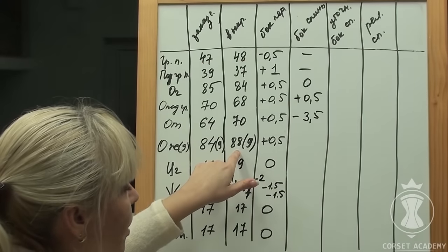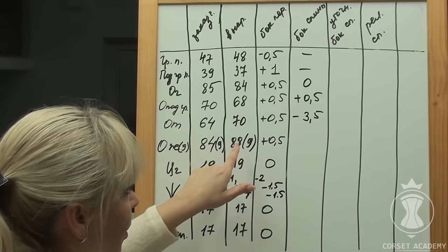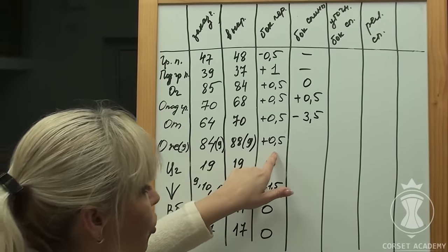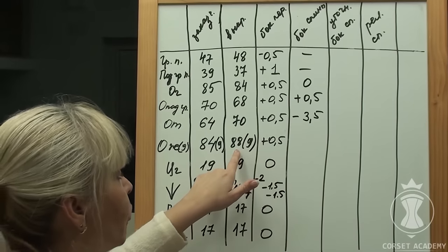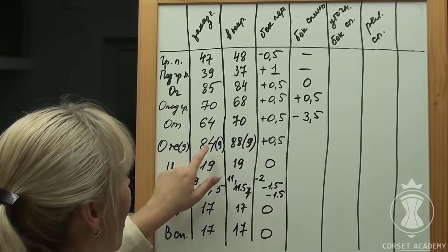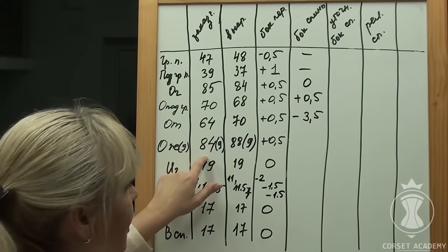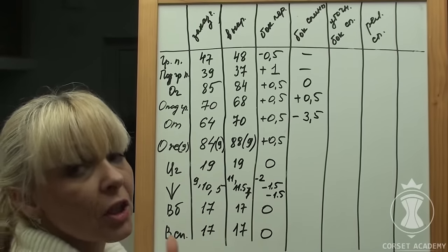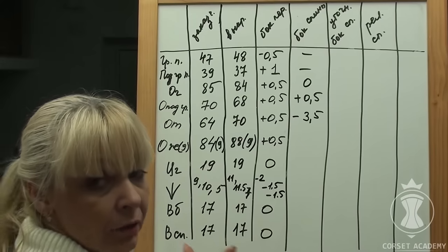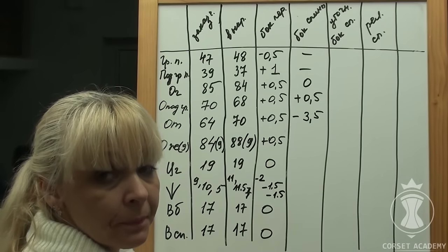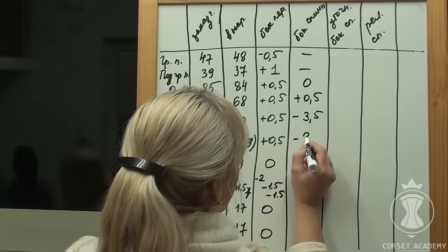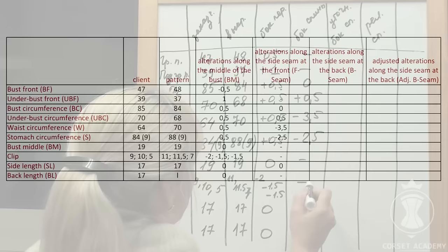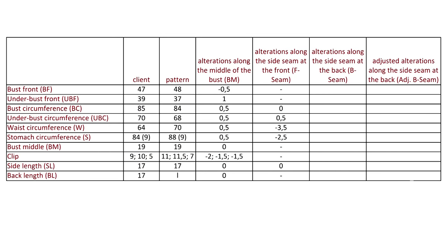Stomach circumference: it is 88 cm on the pattern, and we have added another cm and got 89 cm, while the client's measurement is 84 cm. Therefore, 89 minus 84 equals 5 cm. I divide 5 cm by 2 and get 2.5 cm that should be removed from each side at the stomach level. The remaining measurements require no alterations.